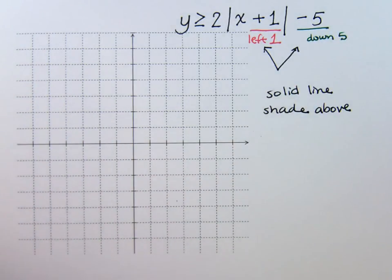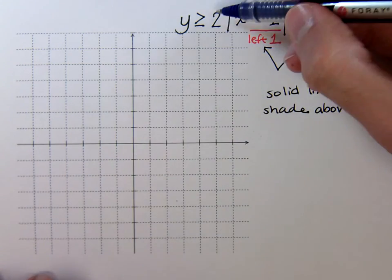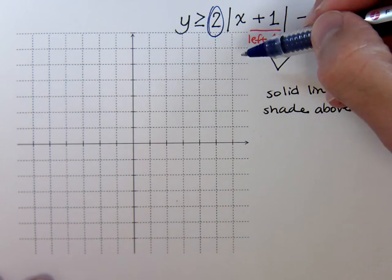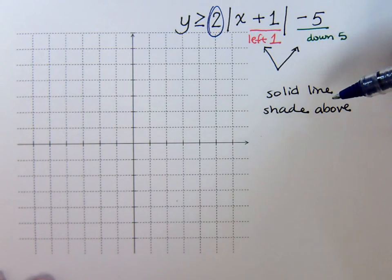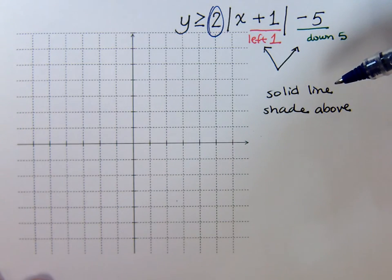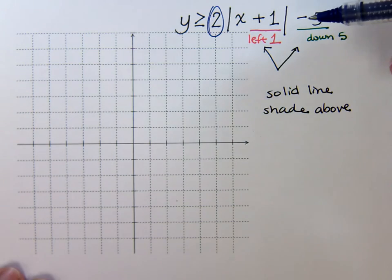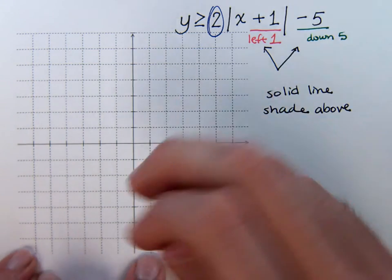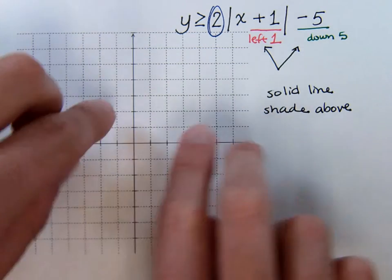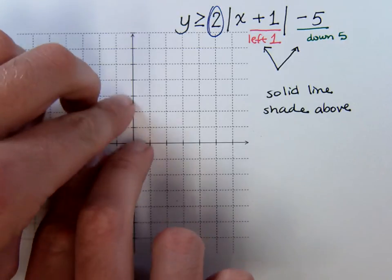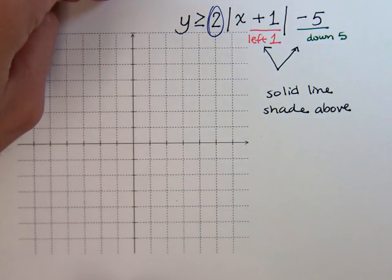And remember this 2 — that 2 is going to act as a slope. It's going to tell you how steep you are. So in this one, we're going to have a vertical stretch. We're going to take this and just stretch it out.